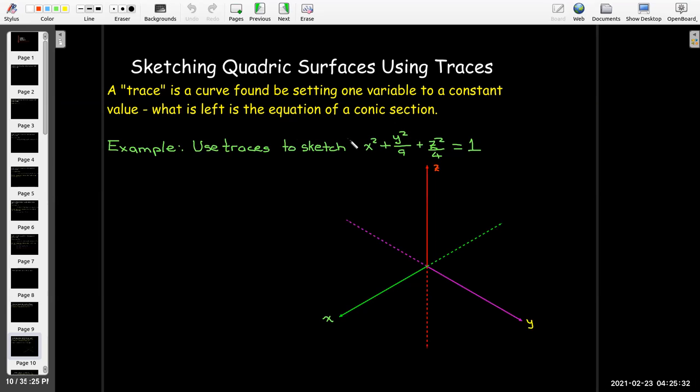So we're going to start with maybe one of the simplest ones. Still not going to be easy for me to draw this. We're going to sketch the graph of the equation x² + y²/9 + z²/4 = 1. So if I set z equal to 0, I get this equation, which is an ellipse in the xy plane. I've done my very best to sketch that ellipse here.